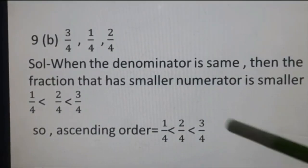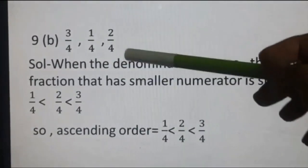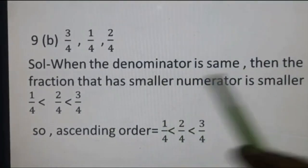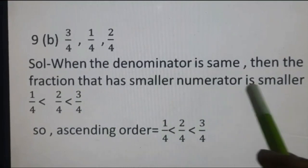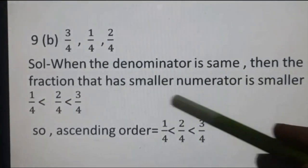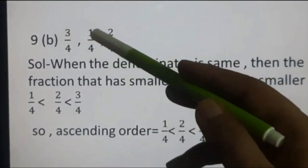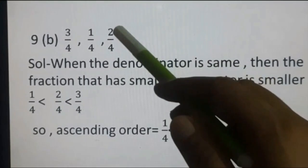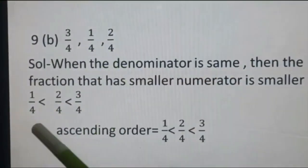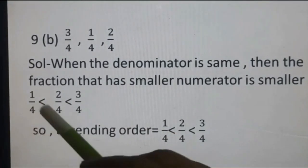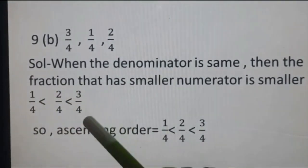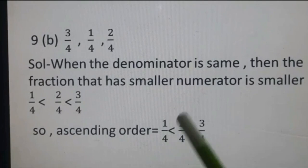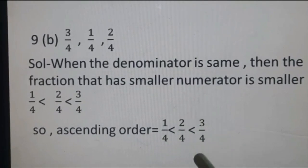Part B: 3 upon 4, 1 upon 4, 2 upon 4. Denominators are the same, so when denominator is same, the fraction with the smaller numerator is smaller. Numerators are 3, 1, and 2 — smallest is 1, next is 2, next is 3. Ascending order: 1 upon 4 < 2 upon 4 < 3 upon 4.